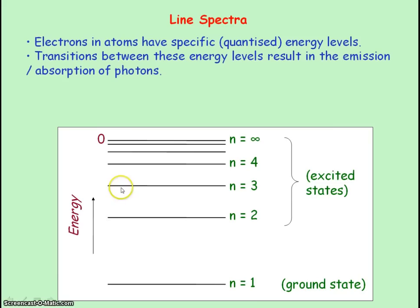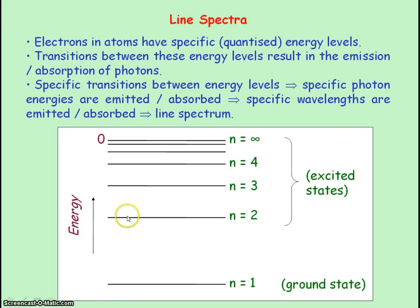An electron can move between energy levels if it absorbs or emits photons. Specific transitions — for example, n equals 1 to n equals 2, n equals 2 to n equals 3, or n equals 3 to n equals 2 — will emit or absorb a specific photon. So specific wavelengths of light will either be emitted or absorbed, which is why you get a line spectrum: discrete wavelengths of light, not a continuous range.